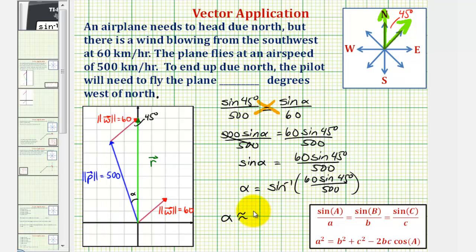Which again is this small acute angle formed by the resultant vector and vector P, which is the number of degrees the plane must fly west of north in order to fly due north.